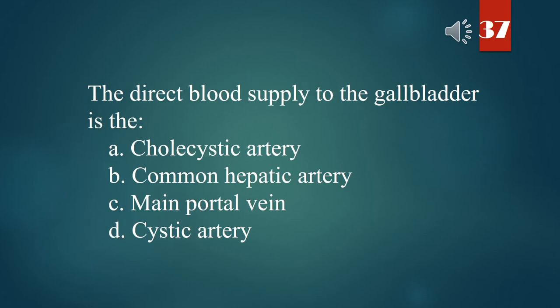The direct blood supply to the gallbladder is the: A. Cholecystokinin. B. Common hepatic artery. C. Main portal vein. D. Cystic artery. The answer is D. Cystic artery.